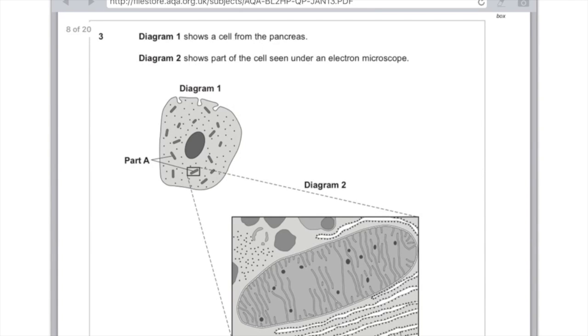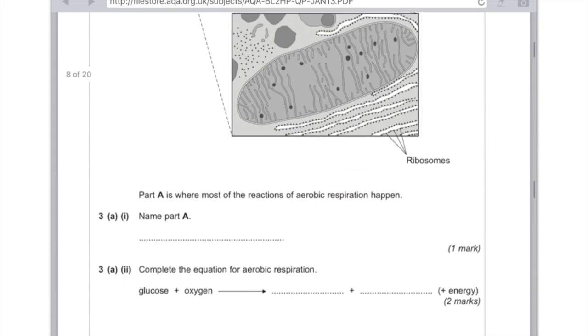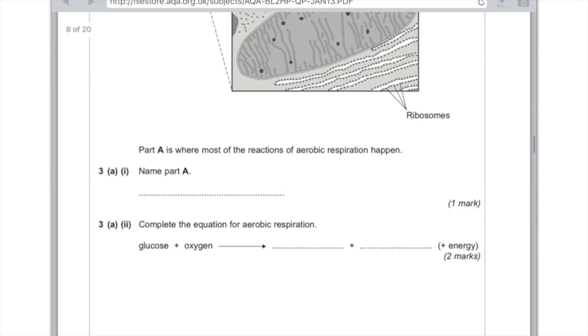Diagram 1 shows the cell from the pancreas. Diagram 2 shows part of the cell seen under an electron microscope. Part A is where most of the reactions of aerobic respiration happen. Name part A and you should know that that is the mitochondrion or the mitochondria. Complete the equation for aerobic respiration, glucose plus oxygen produces carbon dioxide, water plus energy.